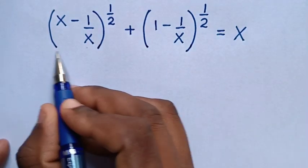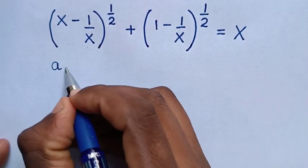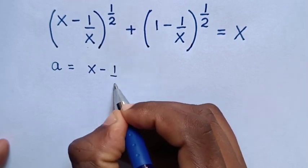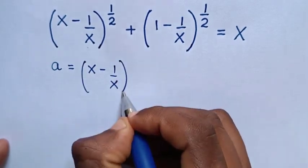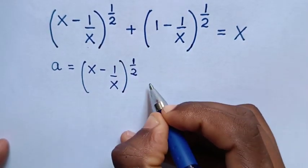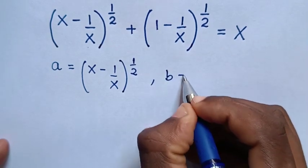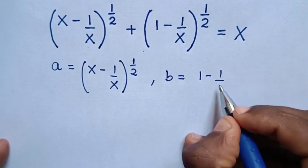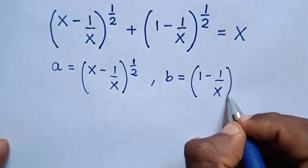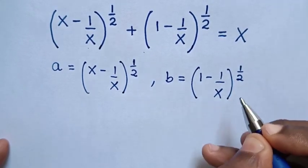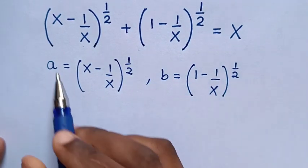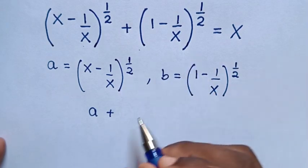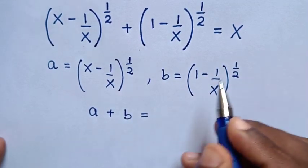First, we let a equal the first part, which is (x minus 1 over x) to the power of a half. And we let b equal the second part, which is (1 minus 1 over x) to the power of a half. Then a plus b is equal to x.